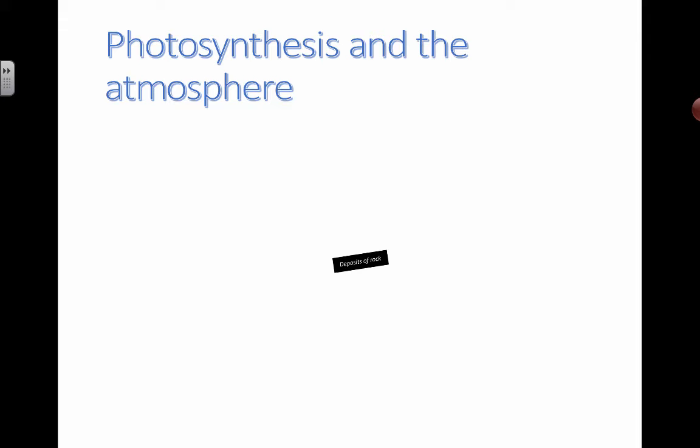At standard level you don't have to go in so much detail. At higher level you have to know this in a lot of detail. But either way you understand that carbon dioxide is taken in by plants. It goes through this process of photosynthesis and glucose is made and turned into starch and other types of organic substances.